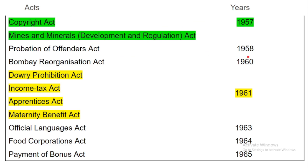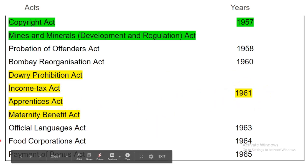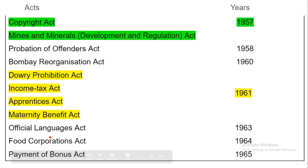Probation of Offenders Act was passed in 1958. Bombay Reorganisation Act was passed in 1960. Dowry Prohibition Act, Income Tax Act, Apprentices Act, and Maternity Benefits Act — these four acts passed in 1961. Official Language Act was passed in 1963. Food Corporations Act was passed in 1964. Payment of Bonus Act was passed in 1965.